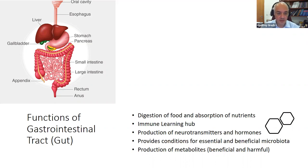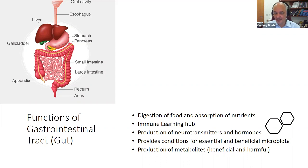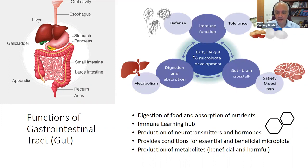These microbes also transform particular substances into beneficial compounds important for our health — these are called metabolites, because they are part of the metabolism of the human body. So in addition to digestion, absorption, and metabolism, the gut also provides hormones and neurotransmitters, making it important in mood and pain — there is a connection between the gut and the brain. It also provides the immune learning hub, which is important for our defense and tolerance to food substances.